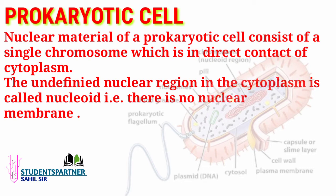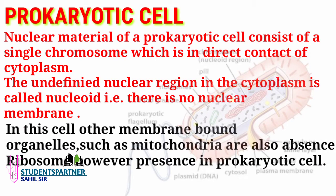The nuclear material in prokaryotic cells consists of a single chromosome and remains in direct contact with the cytoplasm. The region in the cytoplasm where chromosomes are present is called the nucleoid — meaning it is like a nucleus but not a true nucleus. There is no nuclear membrane in these cells, and other membrane-bound organelles — such as mitochondria and Golgi apparatus — are also absent.